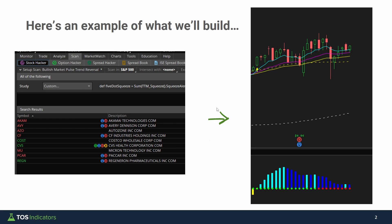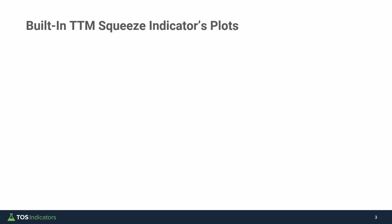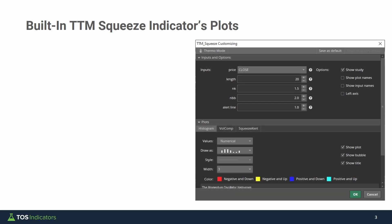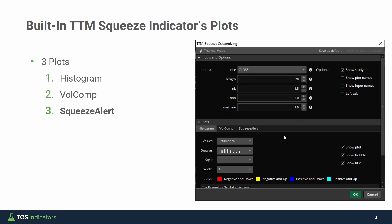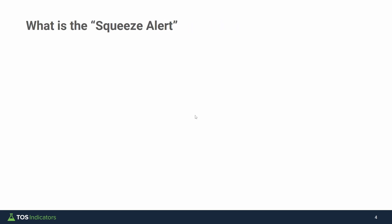Let's get started by first understanding how the TTM squeeze indicator works, and then we're going to write some code. Let's review the different plot variables that exist inside of the TTM squeeze indicator. You can find the plot variables down here inside of the study settings. This is the built-in indicator inside of thinkorswim, and it has three different plot variables. The one we care about for scanning whether or not we have a squeeze is the squeeze alert variable.